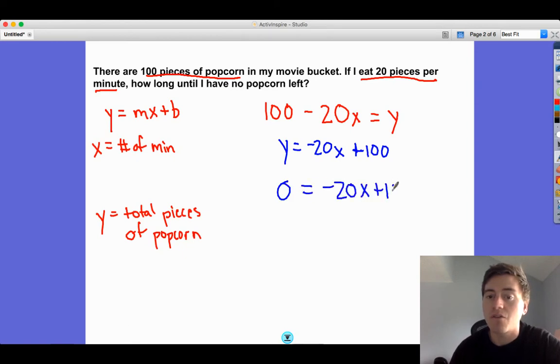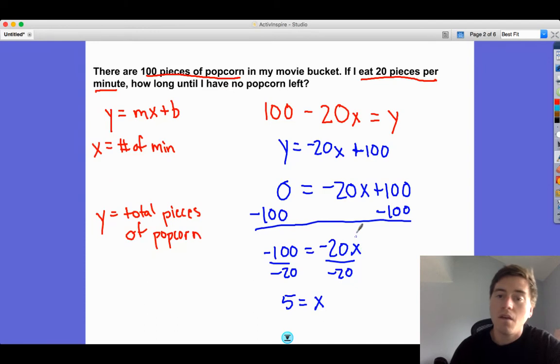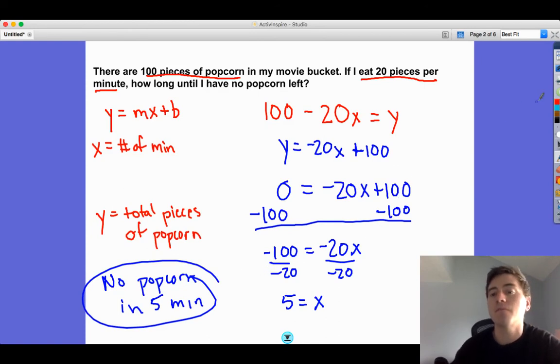We have 0 equals negative 20x plus 100. We just have to solve this. Subtract 100 from both sides. Since we're multiplying negative 20 times x, we divide. That gives us x equals 5. Five is the number of minutes, so we have no popcorn in five minutes.